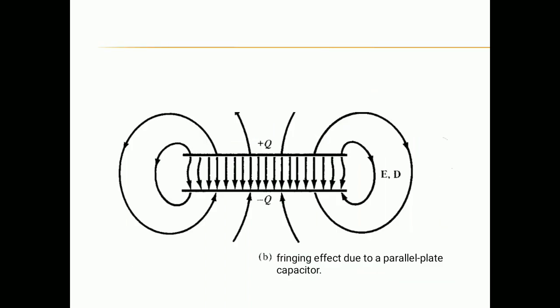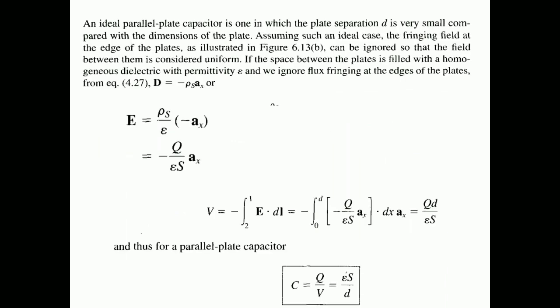In the figure we can see the fringing field, which occurs at more than one medium. We are going to ignore this fringing field. By ignoring it, we can assume the charge is distributed uniformly. For the electric field of one sheet, we already know it equals rho_s divided by epsilon, in the a_x direction.